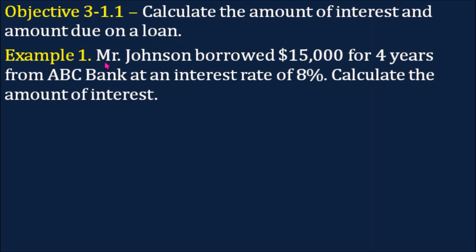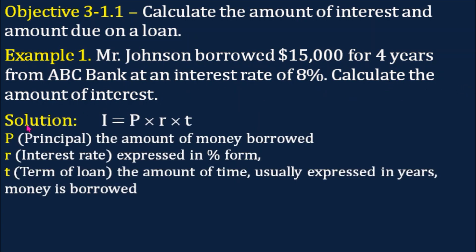Example number 1. Mr. Johnson borrowed $15,000 for 4 years from ABC Bank at an interest rate of 8%. Calculate the amount of interest. This is our formula: I, which stands for interest, equals P times R times T.